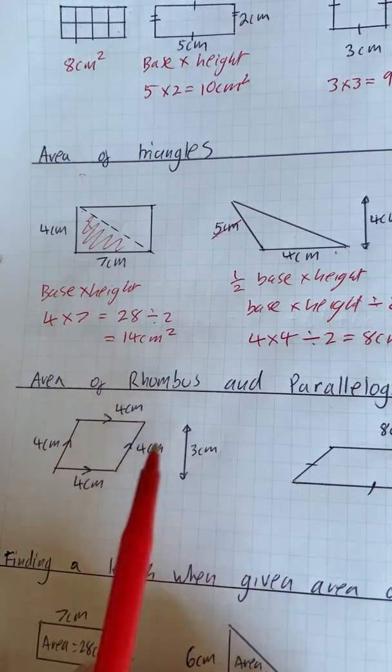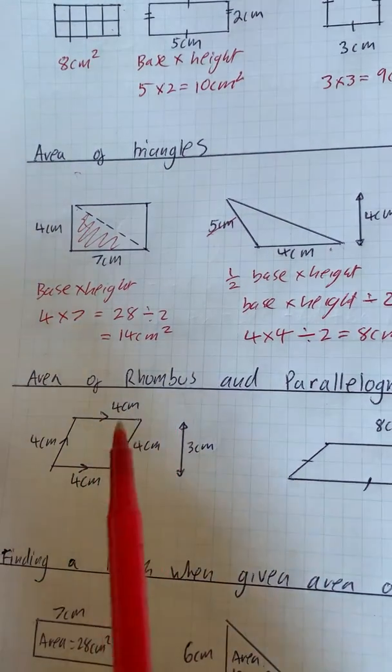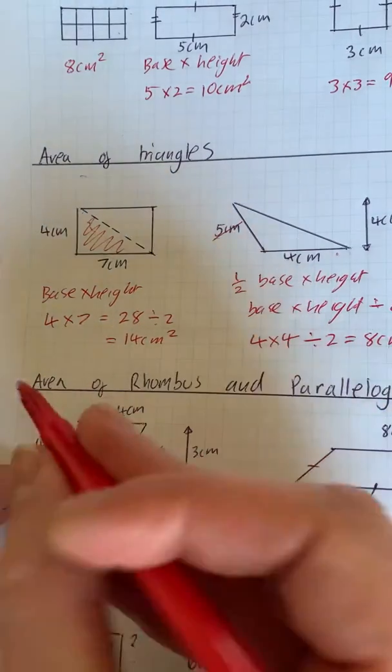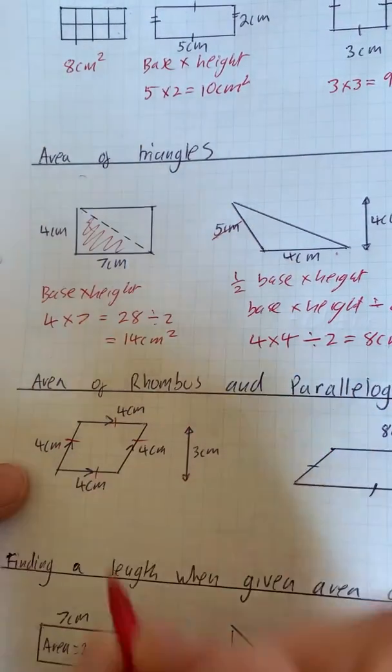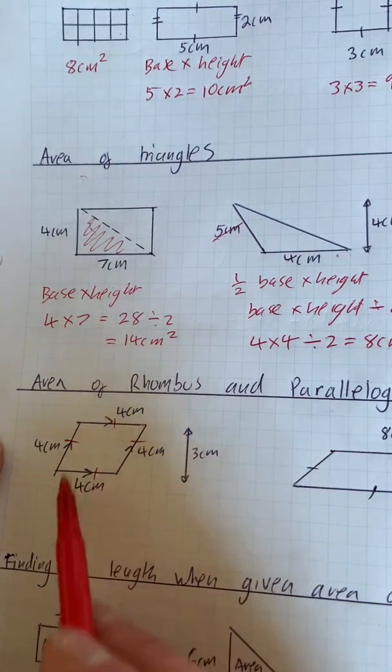So this video is for the area of a rhombus and parallelograms. Now a rhombus has all the sides the same length and it has two sets of parallel sides, but the angles aren't 90 degrees.